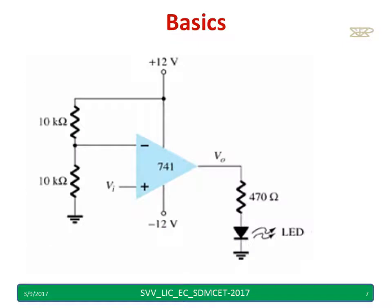This is a very important basic which you should understand before studying the 555 Timer. For the operational amplifier example: we have connected a 10k and 10k resistor to the 12-volt supply. The inverting terminal is connected to the midpoint of the two 10k resistors, giving 6 volts, and VI is given to the non-inverting terminal. The question is: what should VI be to glow the LED?